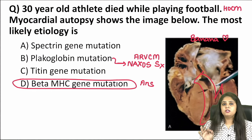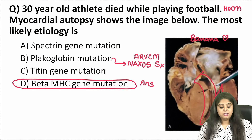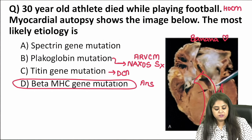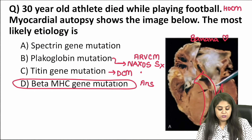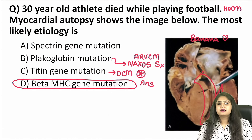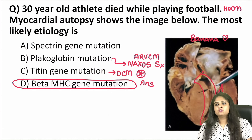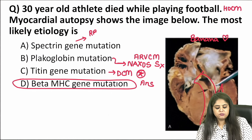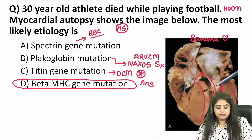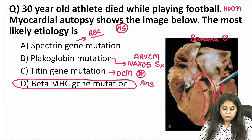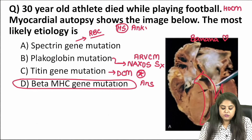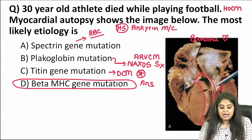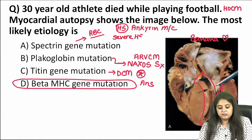Titin gene mutation is seen with dilated cardiomyopathy, in which you see the ninja-star nucleus. Spectrin gene mutation is off track — it is seen in red blood cell disorders like hereditary spherocytosis. The most common gene mutation in hereditary spherocytosis is the ankyrin gene mutation; however, in very severe hereditary spherocytosis, spectrin gene mutation can also be noted.